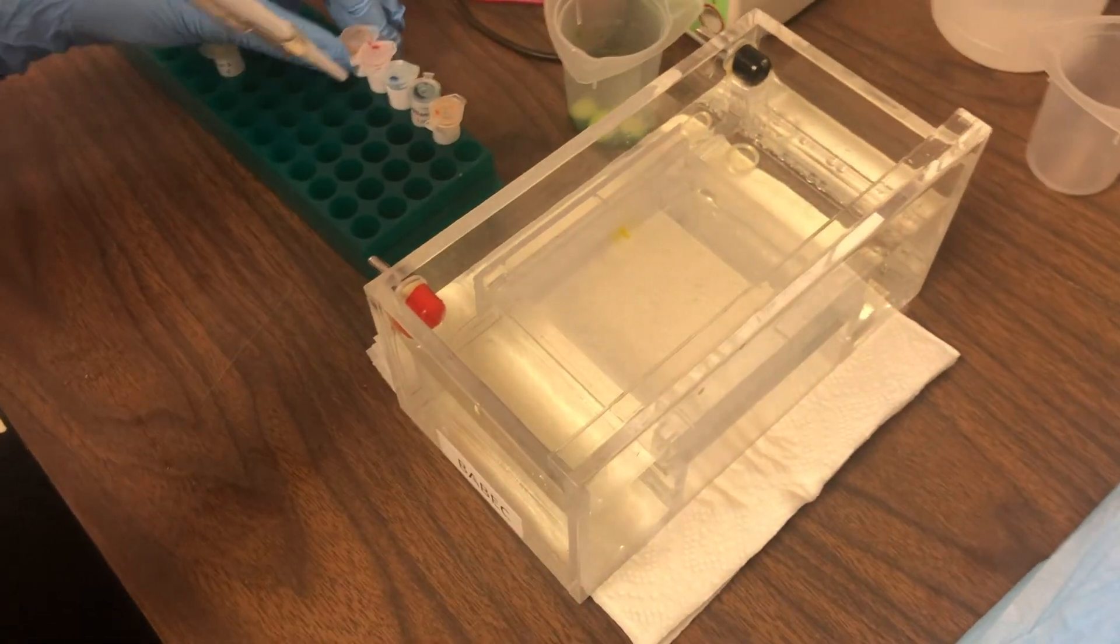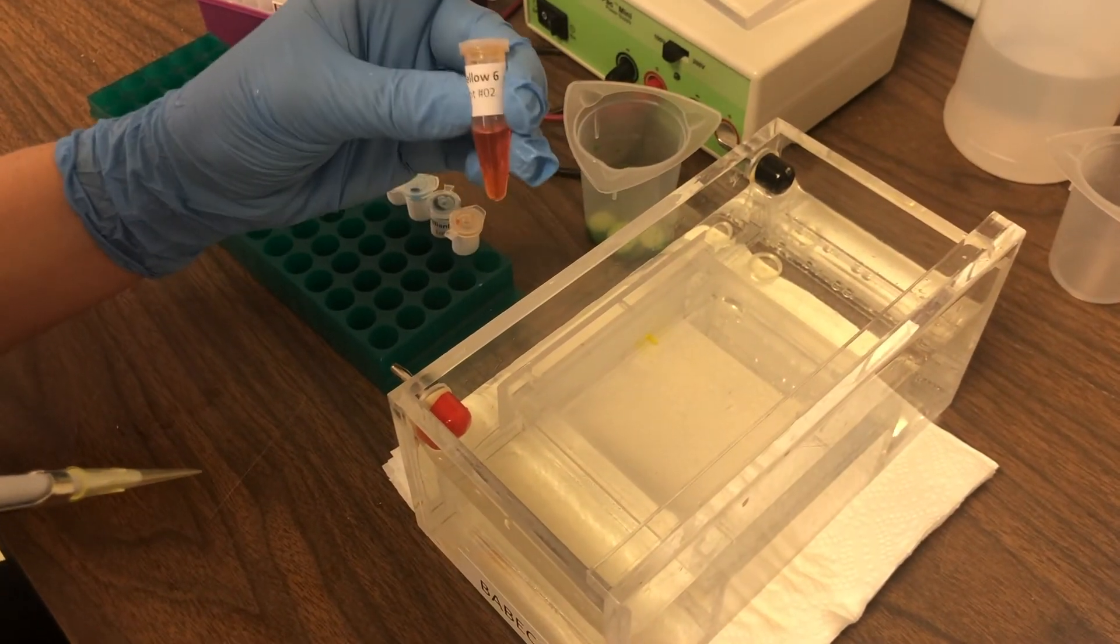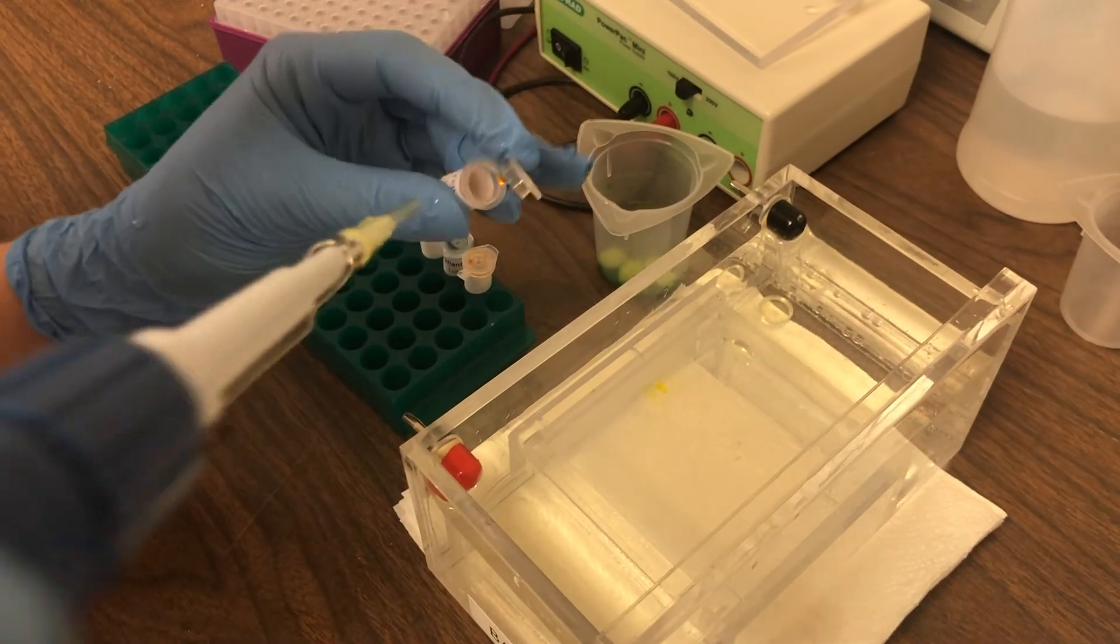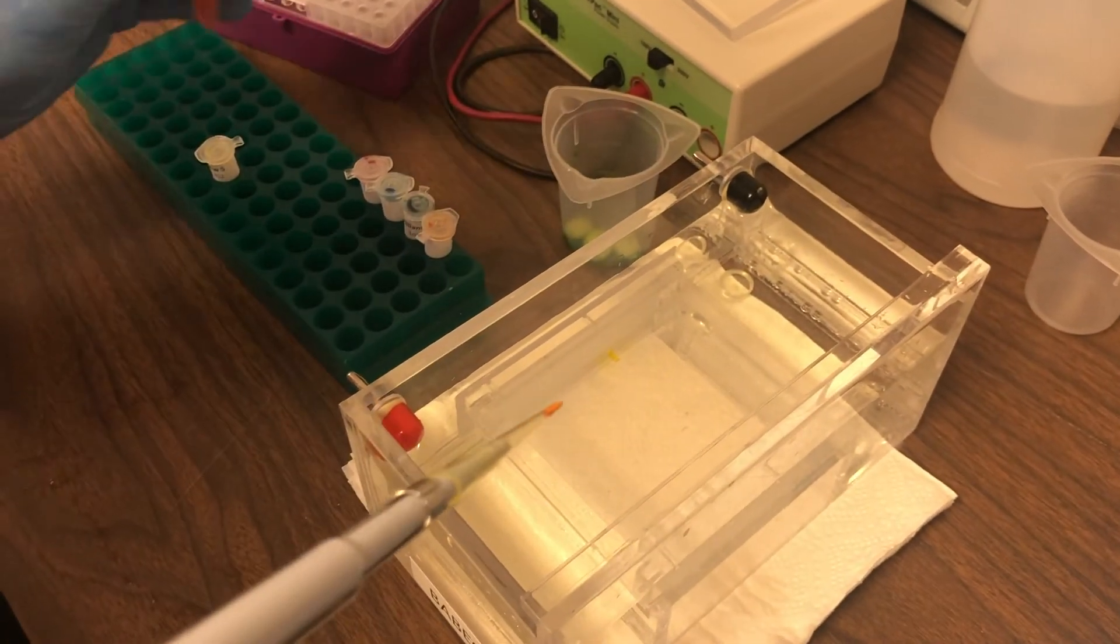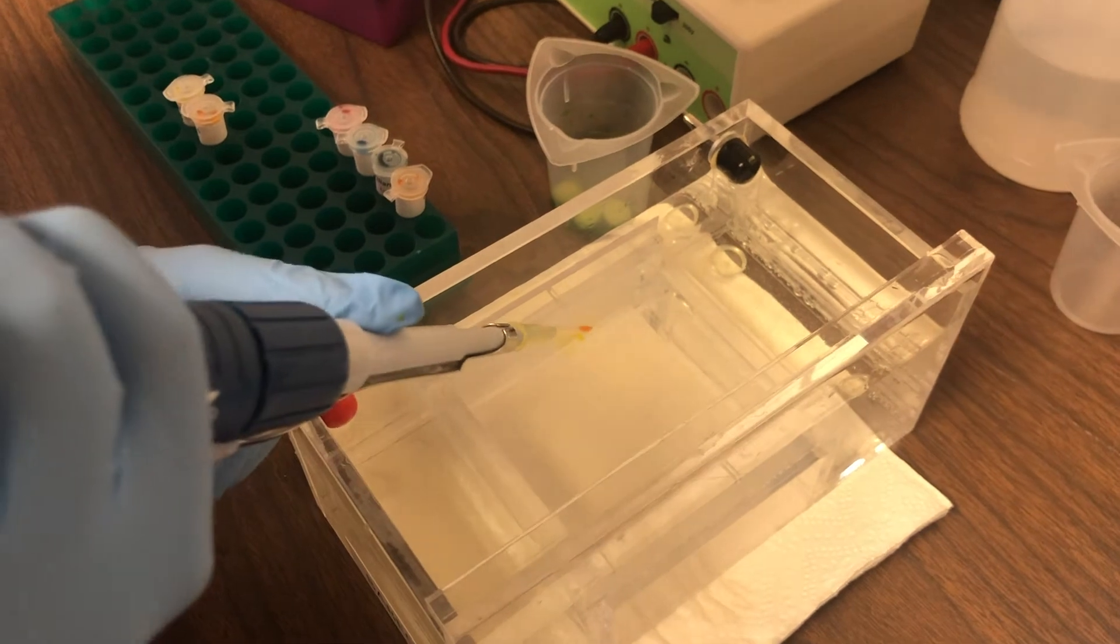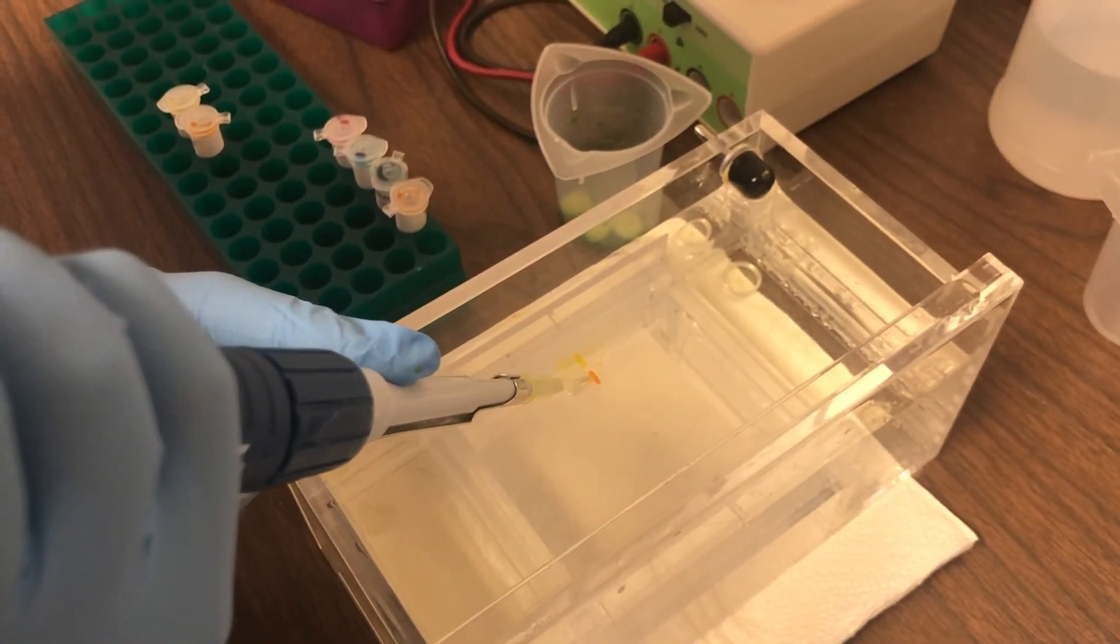Get a new one to add our second sample. In this case, it's yellow number 6. Now, you'll see when we load lane number 2 here, you often want to use, if you're right-handed, your left hand on the box to steady your right hand for loading the gel.